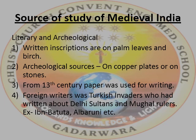There are two main sources to know about ancient history. First, literary sources — they are writings on palm leaves and birch bark. Second, archaeological sources — inscriptions written on plates of copper or on stones.